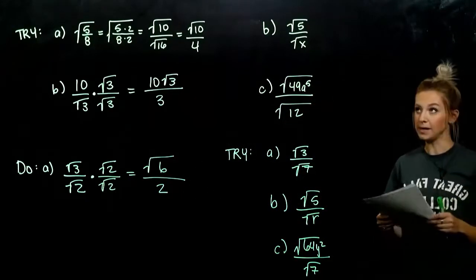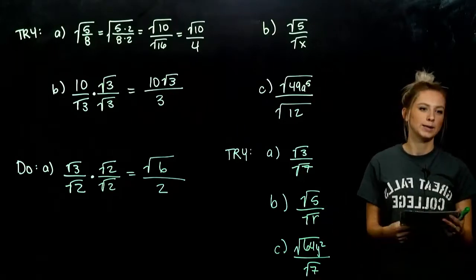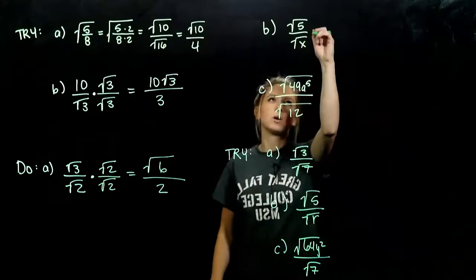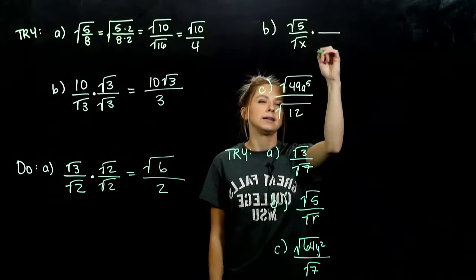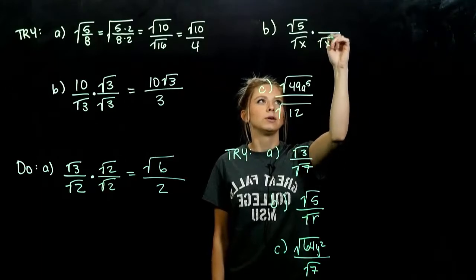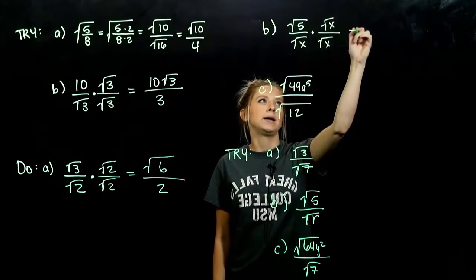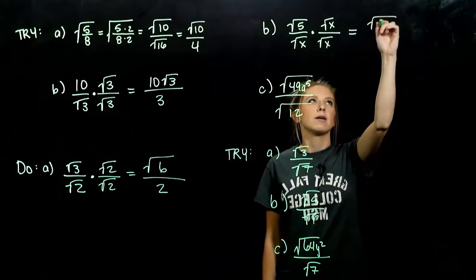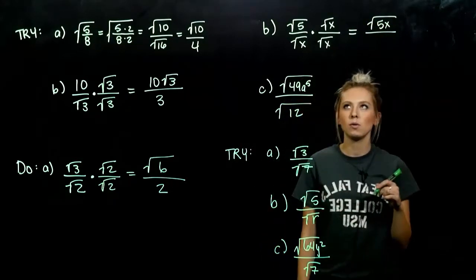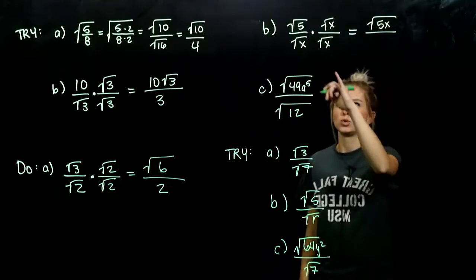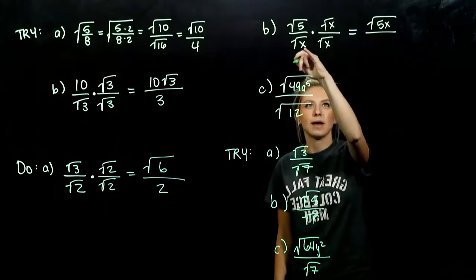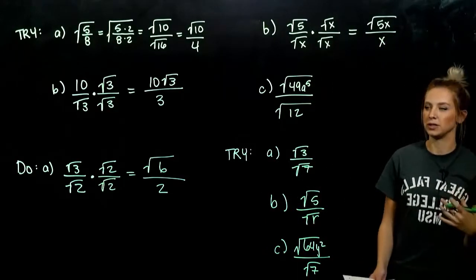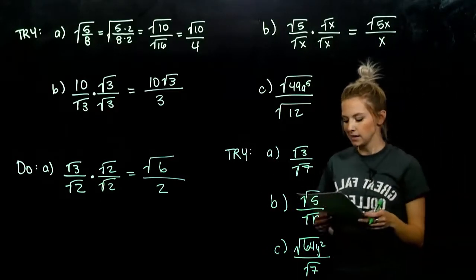For part B, it's already split up, so let's work on the outside. What do I need to multiply root x by to get a perfect square? Root x — whatever I do to the bottom, I have to do to the top. In the numerator, we have root 5x. Down below, two factors of x: x squared under a square root gives us x. It's rational — no radicals involved.